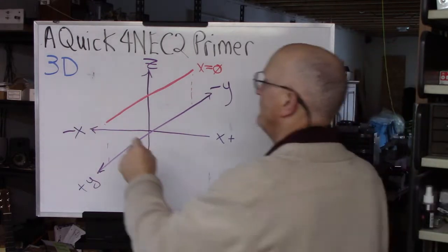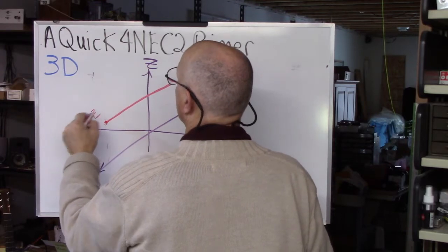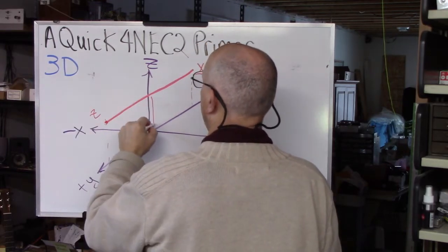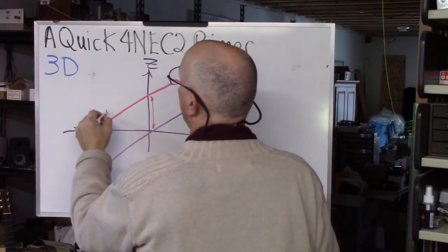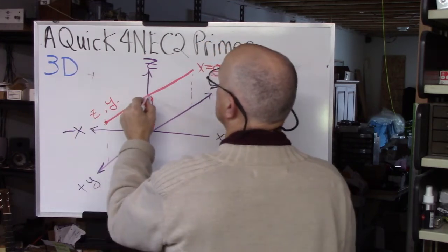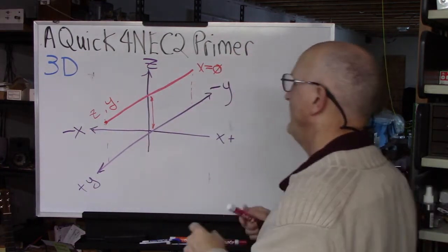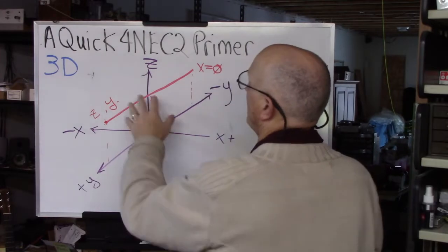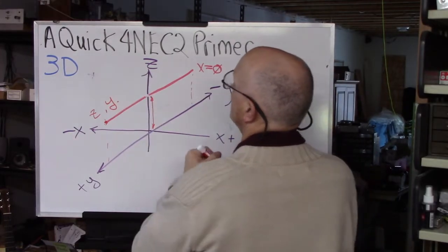Then the only values that we have to be concerned about are Z which is the height here above ground and Y which is the distance from the center out to the ends. And by convention we generally want to put the antenna center at zero.